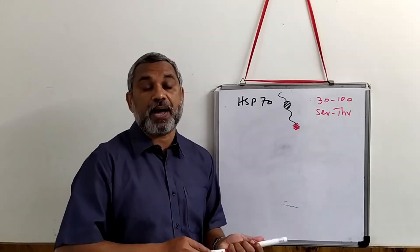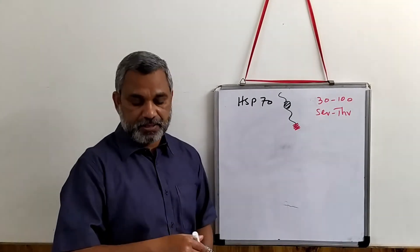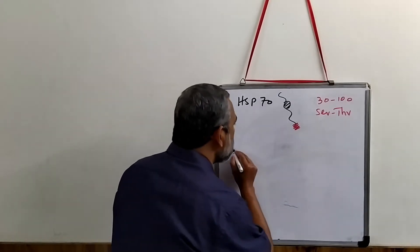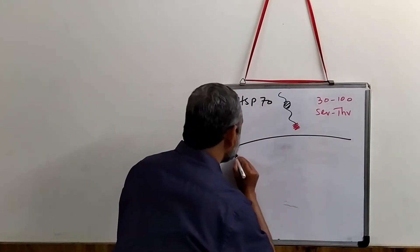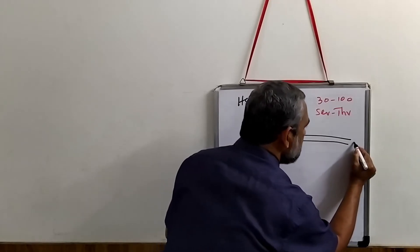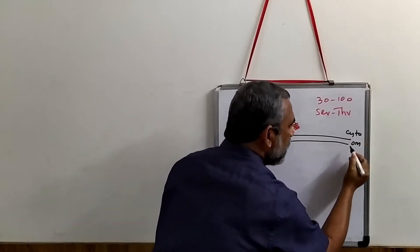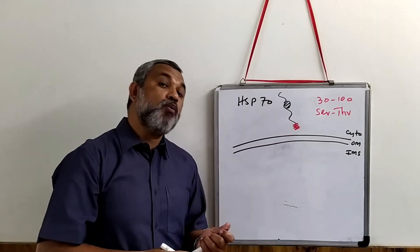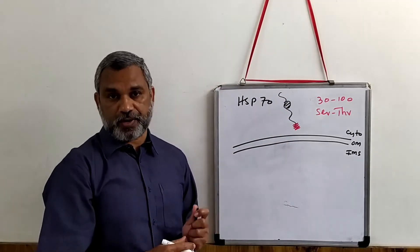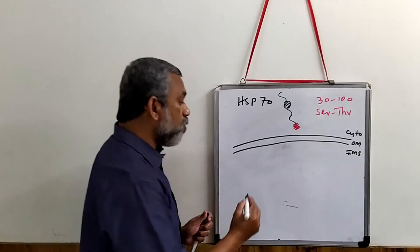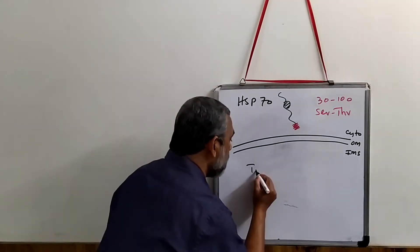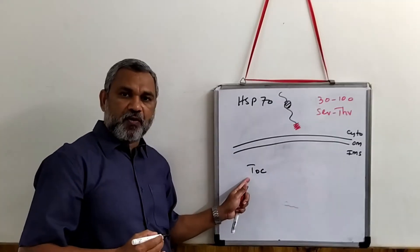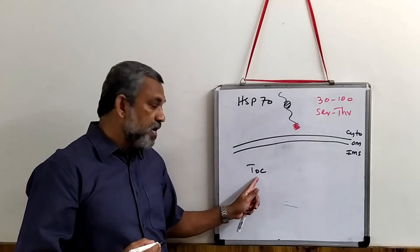Let us try to understand this translocator. Consider the outer membrane — this is the cytosol side, and this will be the inner membrane space. The outer membrane has a translocator that is known as TOC. TOC stands for Translocon of the Outer envelope of the Chloroplast.